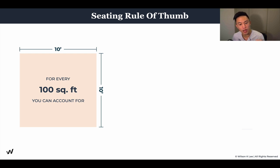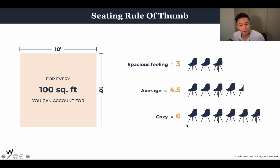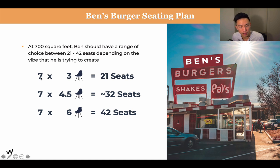The seating rule of thumb: for every 100 square feet of your location, you should be accounting for either three seats, 4.5 seats, or six seats. If you want a very spacious feeling with lots of room to breathe, account for three seats per 100 square feet. On average, 4.5 seats. And if you want it to be a little cozy, account for six seats.